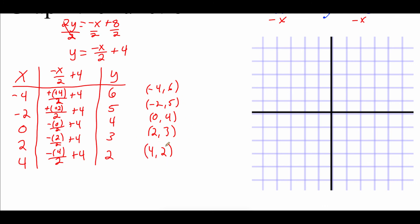Now I'll plot those ordered pairs on the grid. (Negative 4, 6) is left 4, up 6. (Negative 2, 5) is left 2, up 5. (0, 4) is straight up 4 spaces. (2, 3) is right 2, up 3. And (4, 2) is right 4, up 2. Then I connect all the points with a straight line and add arrows on each end to show the line extends in both directions forever.